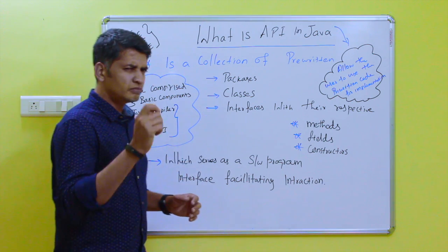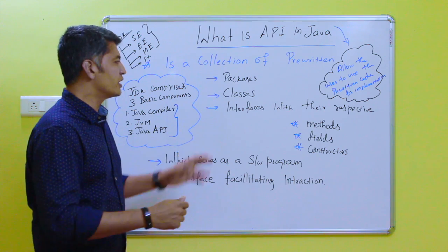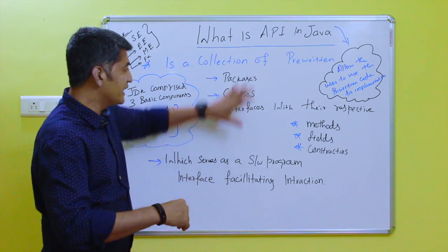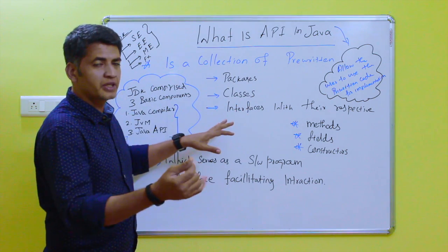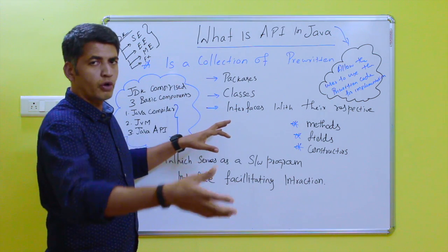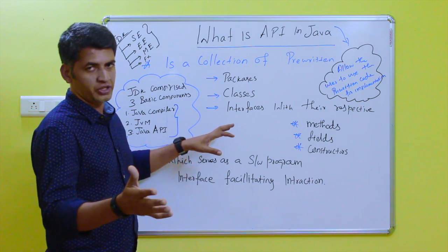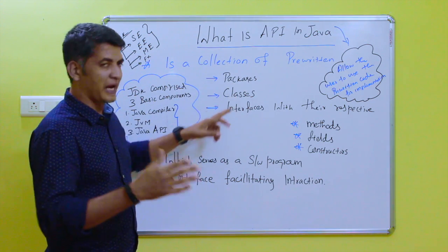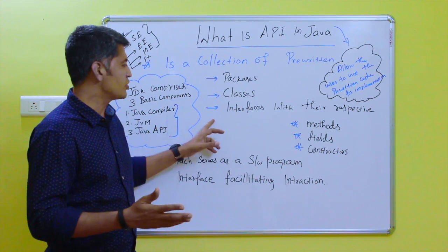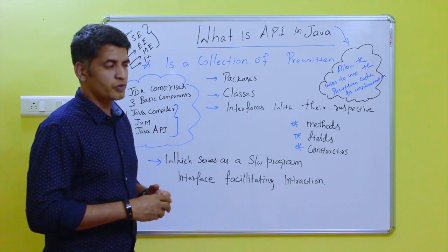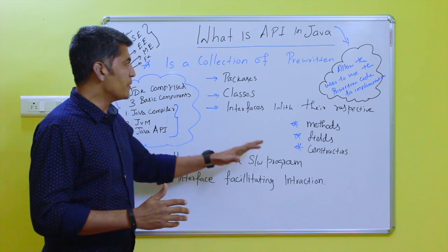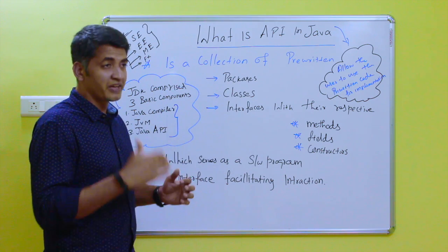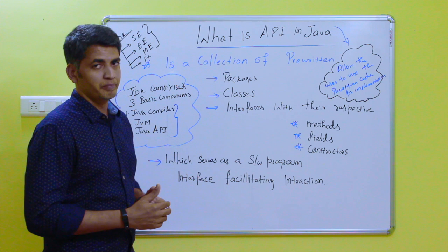So how can the user use the API? API allows the user to use the pre-written code to develop new software components or applications. The pre-written code may be a package, a class, or an interface. This is how API is used in Java, and it also supports Java program execution and development.